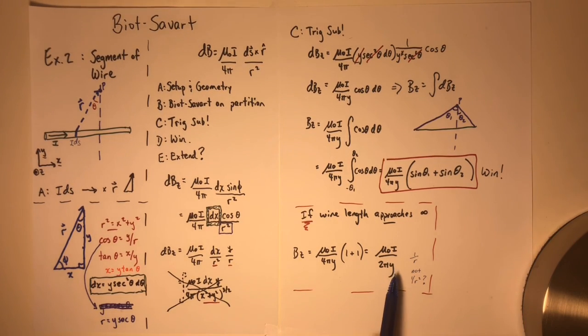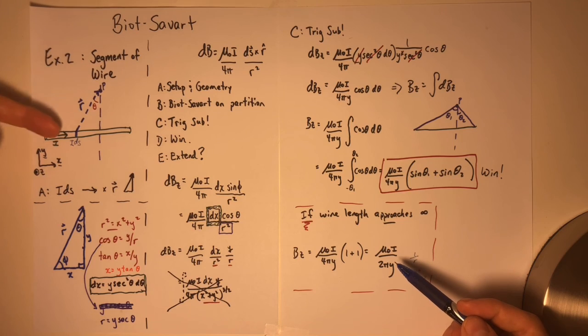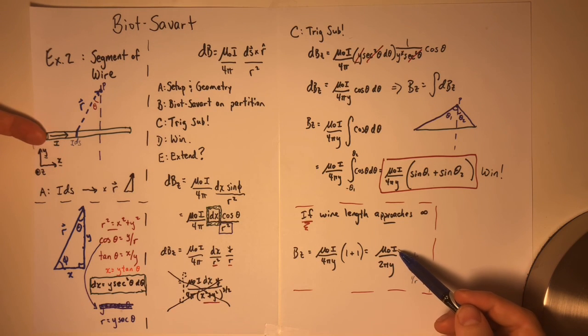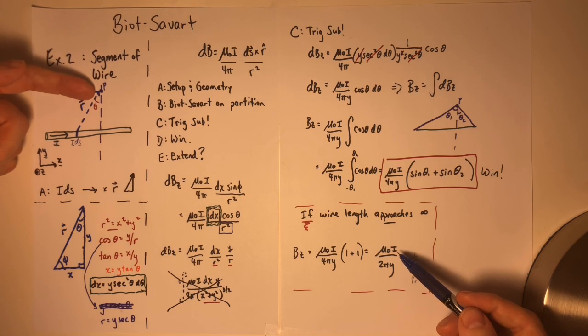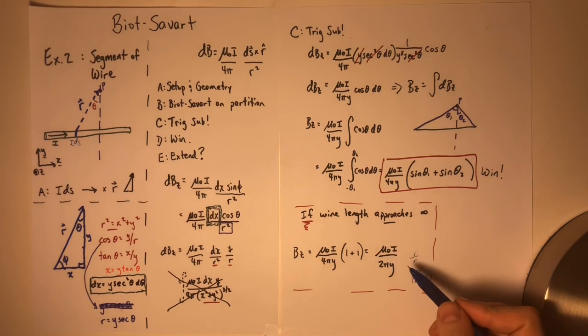The second thing is that you can see the only thing that matters in terms of the field strength, as you would expect, are the strength of the current and the distance from the wire. As the strength of the current increases, the numerator increases and the field gets stronger. As you get farther away from the wire, denominator increases, field gets weaker.